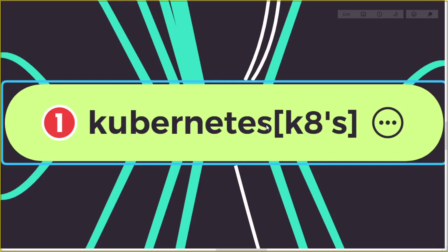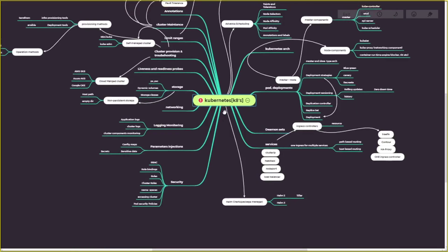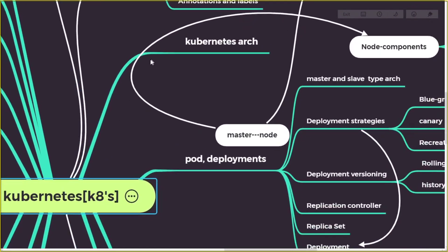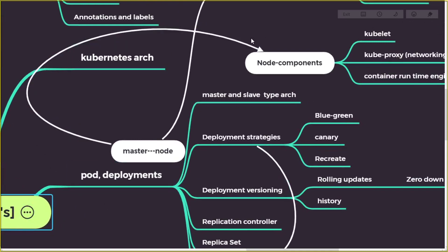So I'm showing the topics I'll be covering. Initially, we will start from the architecture — from the scratch — and move into advanced mode. Kubernetes has a master and slave architecture, so we will look at what components the master consists of and what the node consists of. Understanding the architecture is very important in order to troubleshoot any problem that comes up.